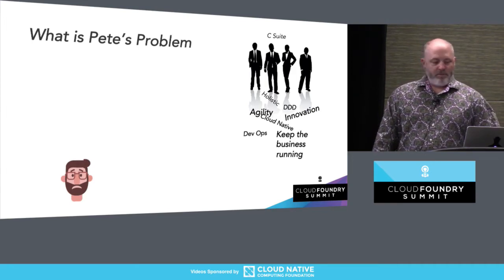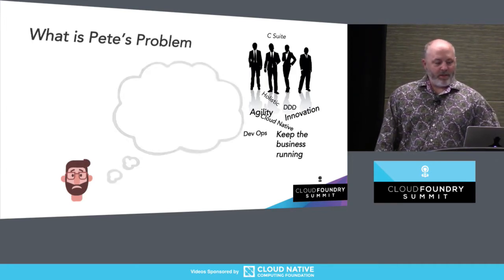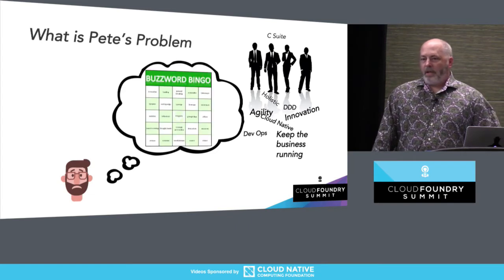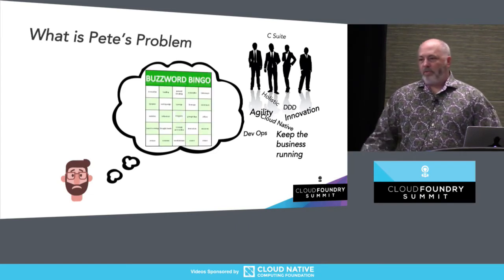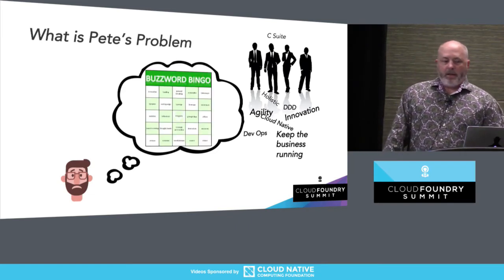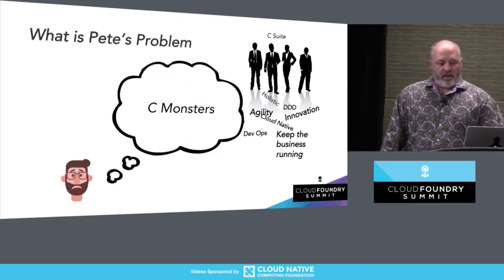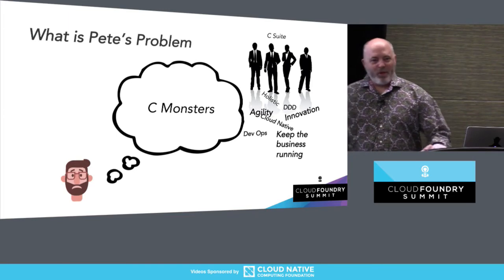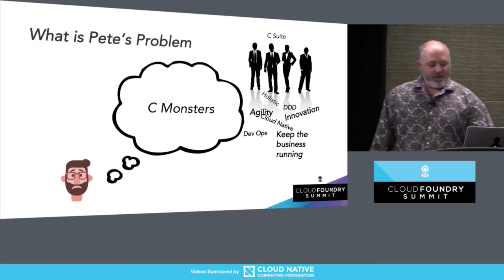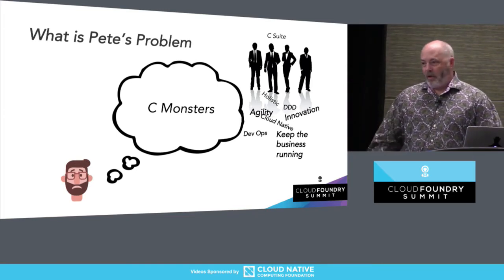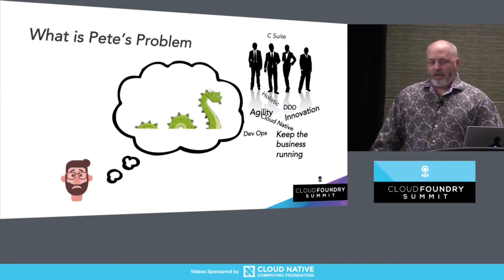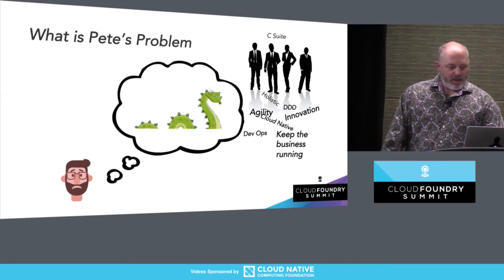So what does Pete think about? Well, he's thinking a lot of things. The first one is, of course, buzzword bingo — and he won. But more importantly, he's thinking these guys are monsters. This is really, really challenging, and they don't necessarily understand how challenging it is. So they become sea monsters in his mind.